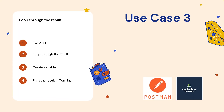The next use case is looping through a result. Sometimes when you call an API you get a response body that contains a list or array. You need to loop through the array, find individual elements, and print the information you need from each element. The steps are: call an API, get the response, loop through the result, create a variable from each element, and finally print the variable in the terminal.